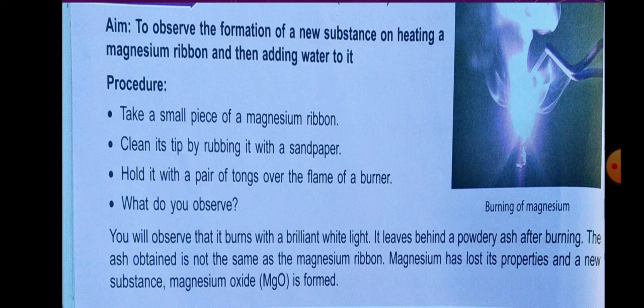When you burn the magnesium ribbon, you will observe that it burns with a blue flame. When the magnesium ribbon is completely burned, at the end you will get the ash of magnesium. This ash is known as magnesium oxide. So the burning is a chemical change. When you put that ash into water, you will get something new again — do you know what it is?